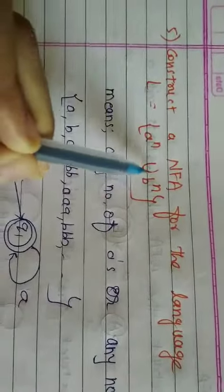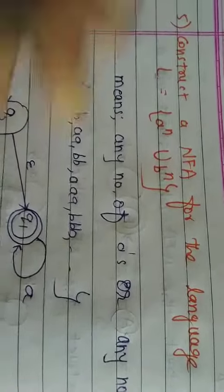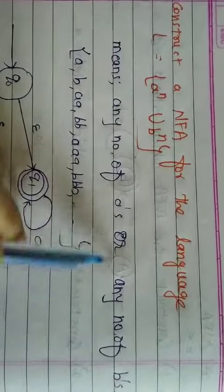A raised to N, union, B raised to N. I mean, A is any number, B is any number. It means any number of A's and any number of B's.